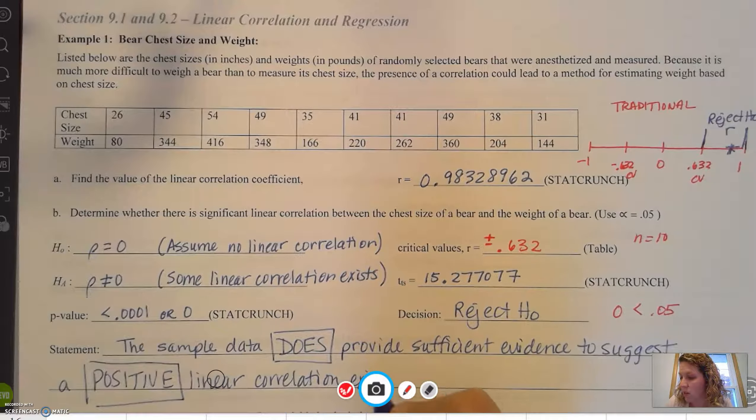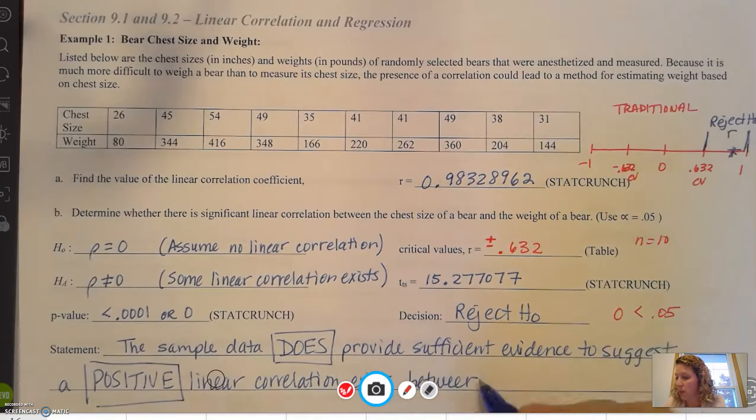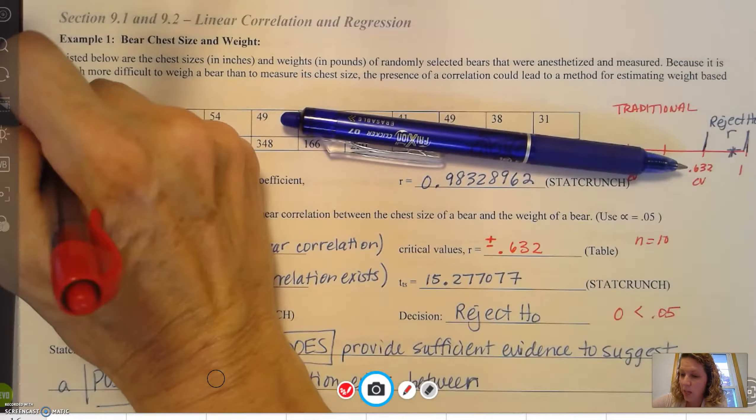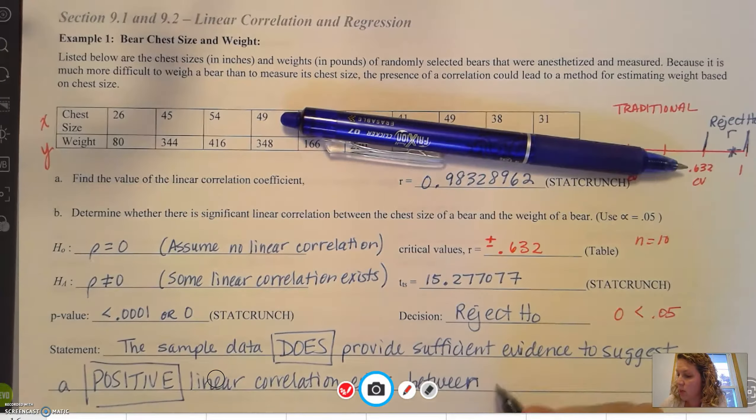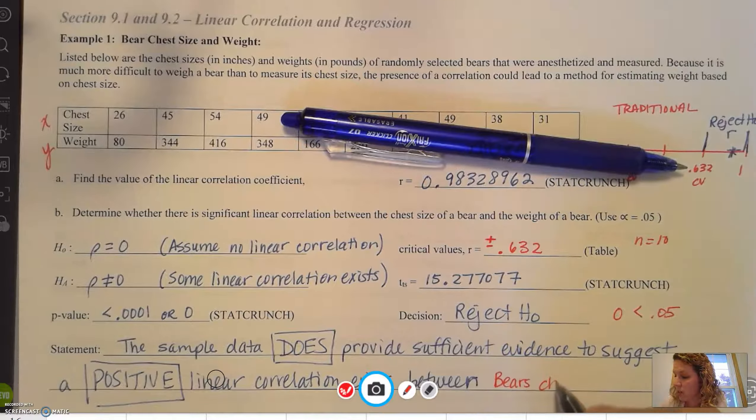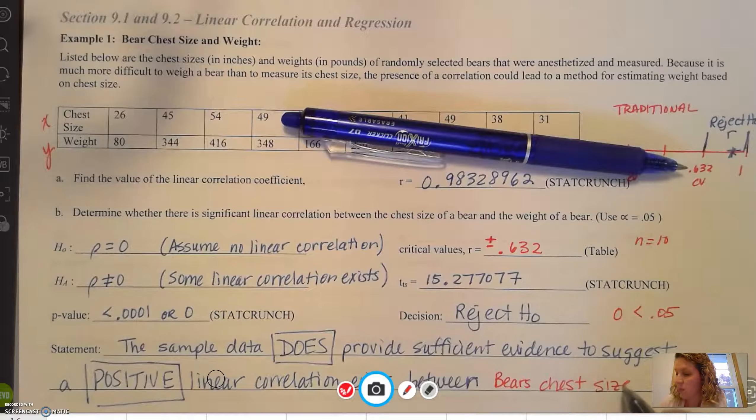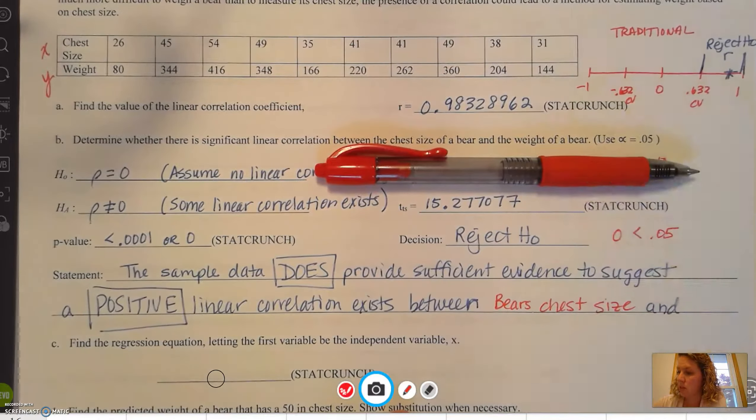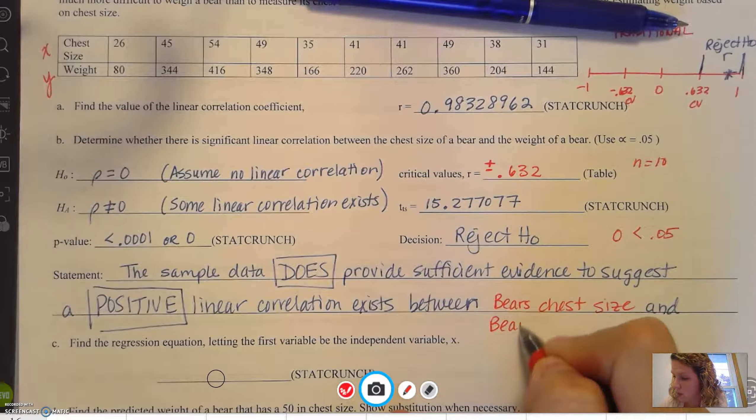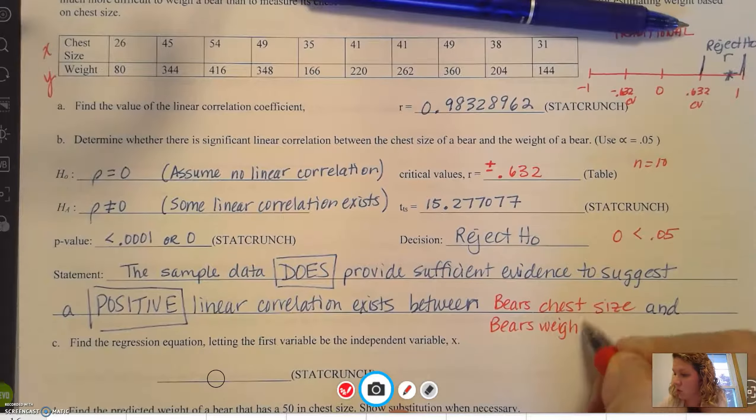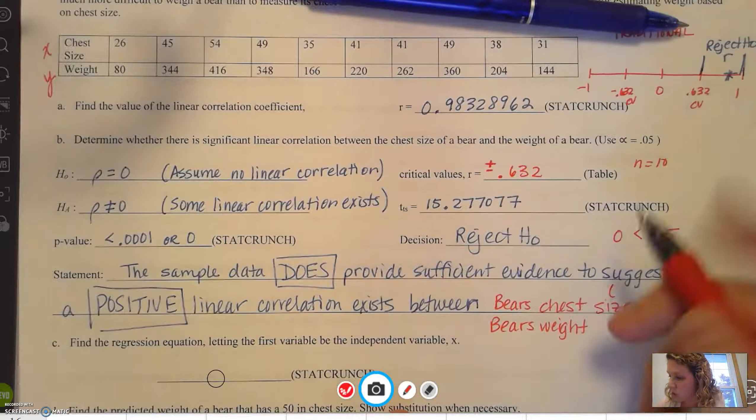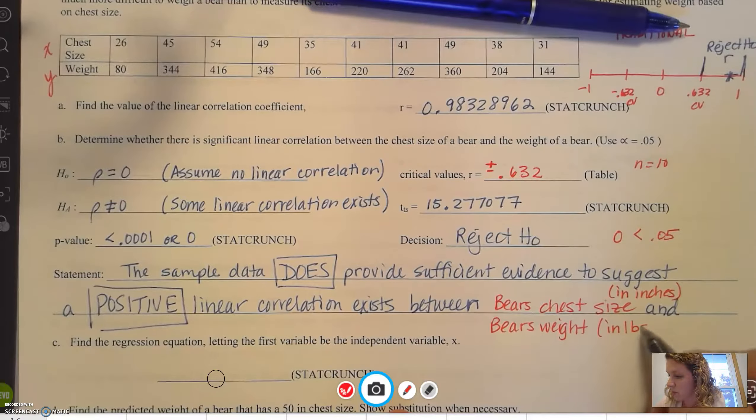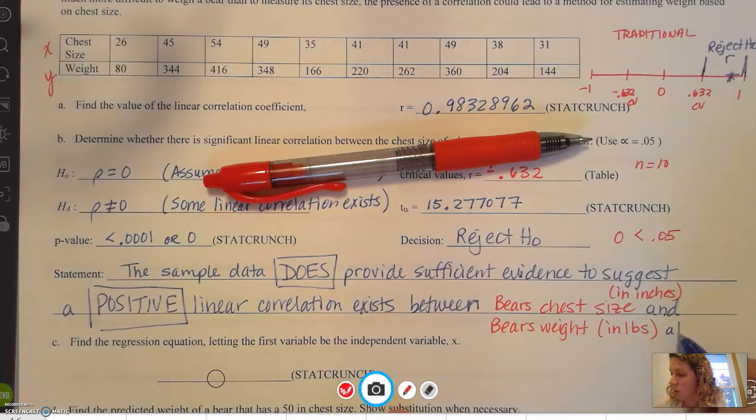So that word positive is important. Correlation exists between the two variables. Remember, x was the chest size and y was the weight. So between the bear chest size and the bear's weight. Let's put the units in here too. The bear's chest size is in inches, and the bear's weight is in pounds. Make sure you include the units at our alpha level 0.05.